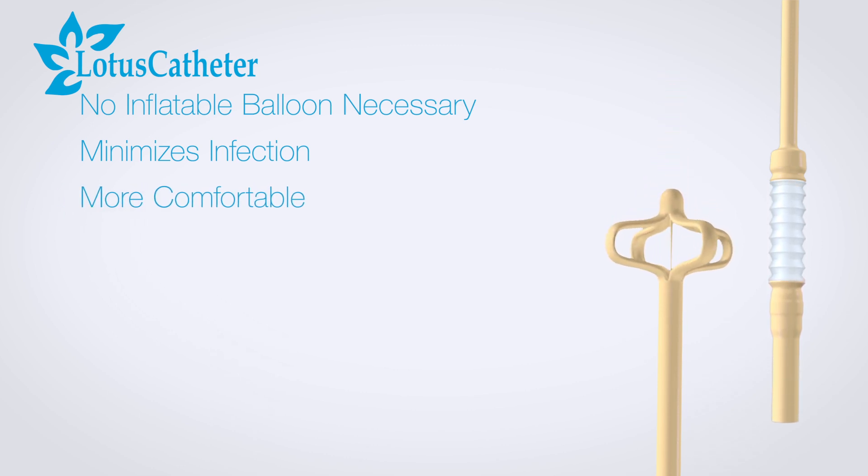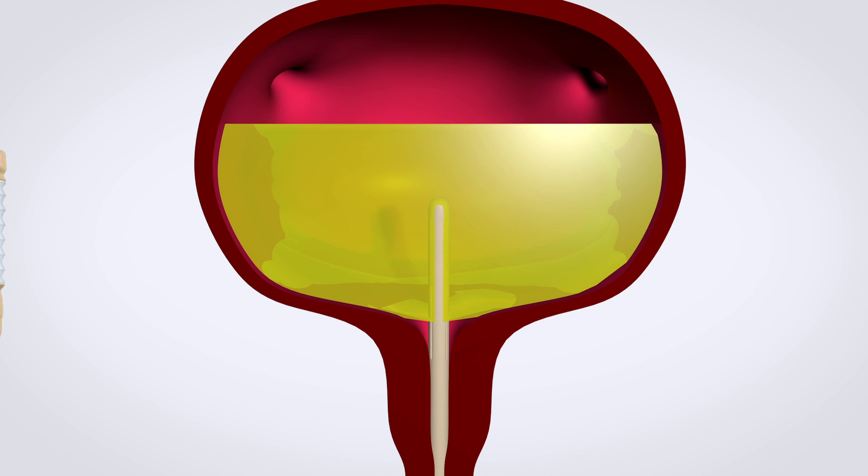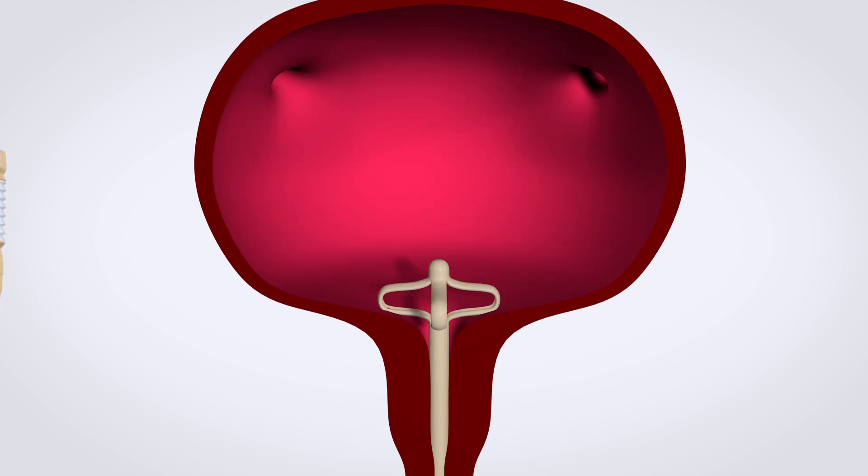When the Lotus catheter is inserted into the bladder, the lumen rest at the bladder neck to ensure complete drainage, thereby decreasing incidence of infection.